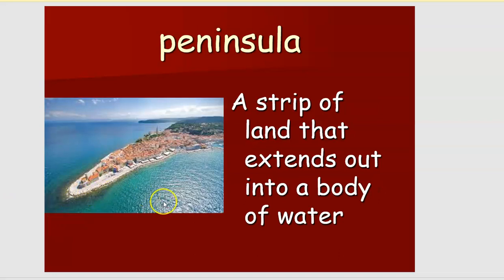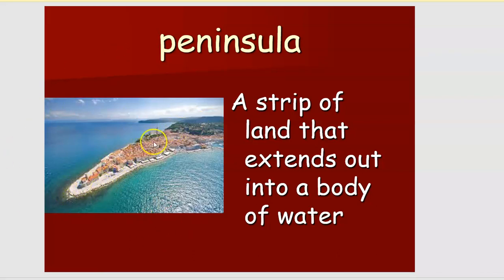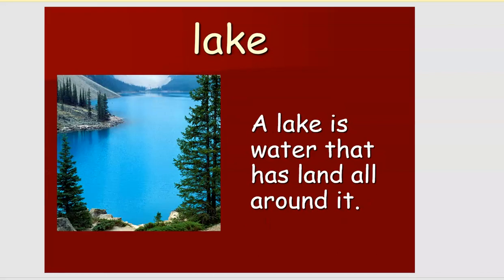What is a peninsula? A peninsula is a strip of land that extends out of a body of water. You can see here — this is a body of water, and there is a stretch of land extending out. That strip of land is called a peninsula.